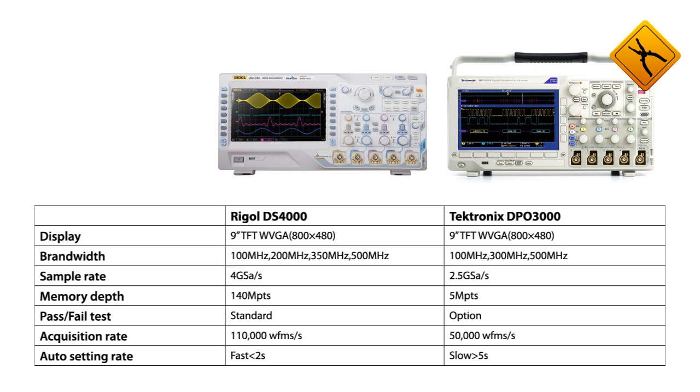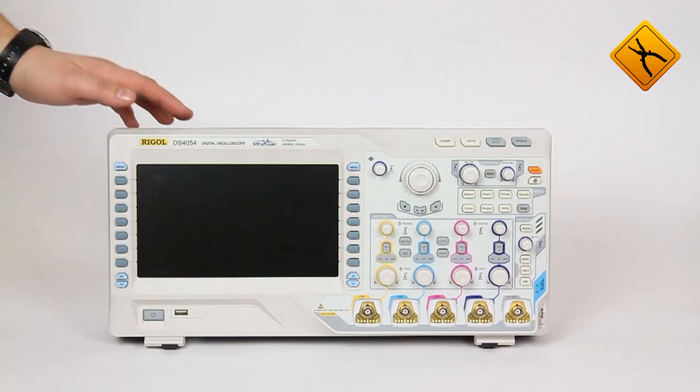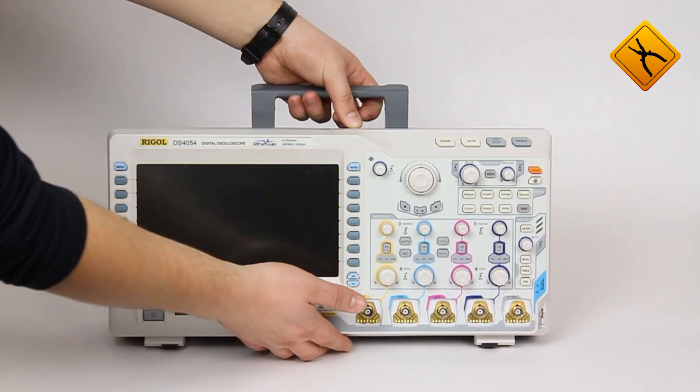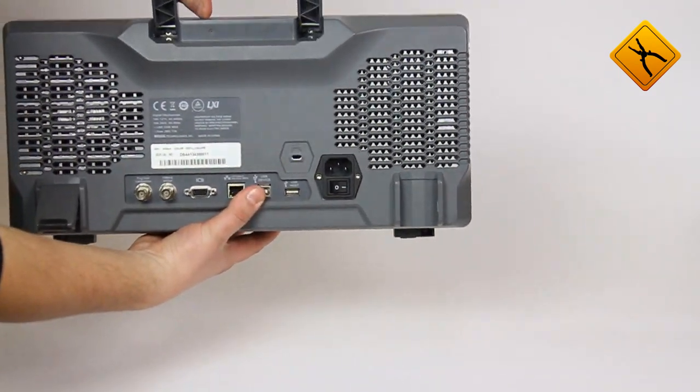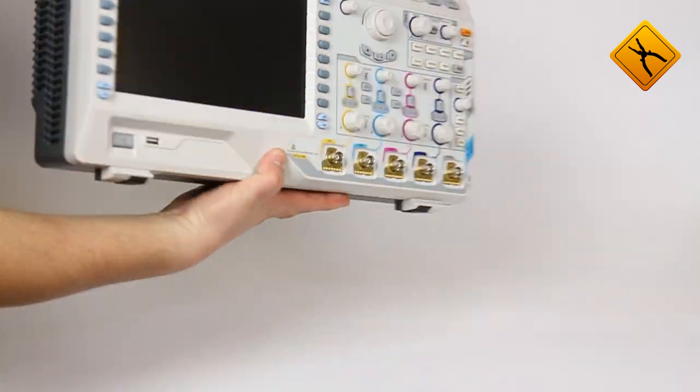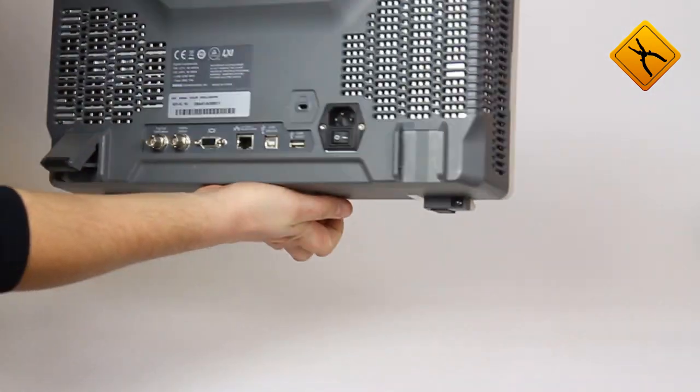Acquisition rate: 100,000 waveforms versus 50,000. Let us have a detailed look at the 4-channel oscilloscope Rigol DS4054 with a bandwidth of 500 MHz.